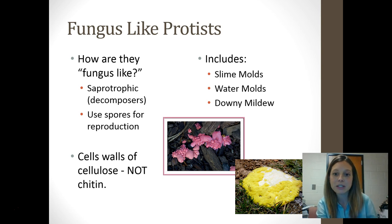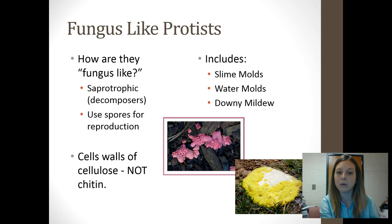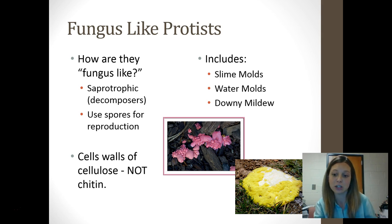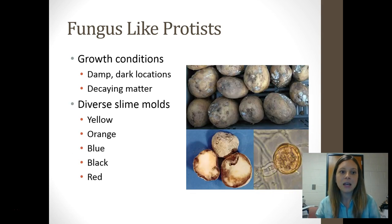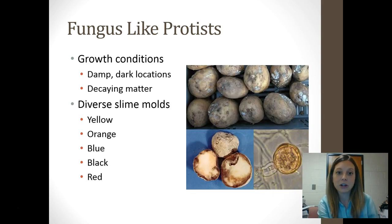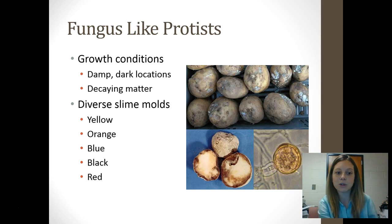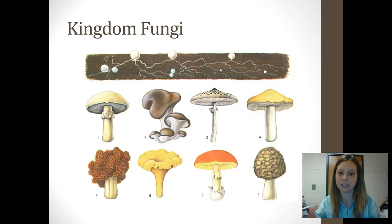Fungus-like protists include things called slime molds, water molds, and downy mildew — which if you've ever had fish, you've probably heard of. Just like fungus, they like to grow in damp, dark locations where there's some sort of decaying matter. There's a wide variety — yellow slime mold, orange slime mold, blue, black, and red slime mold, all sorts of different kinds.